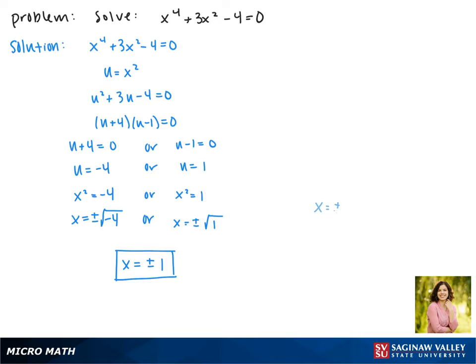Let's note that if we include complex solutions, plus or minus the square root of negative 4 is plus or minus 2i. So if we want to look at all solutions, this would be x equals plus or minus 1 or plus or minus 2i.